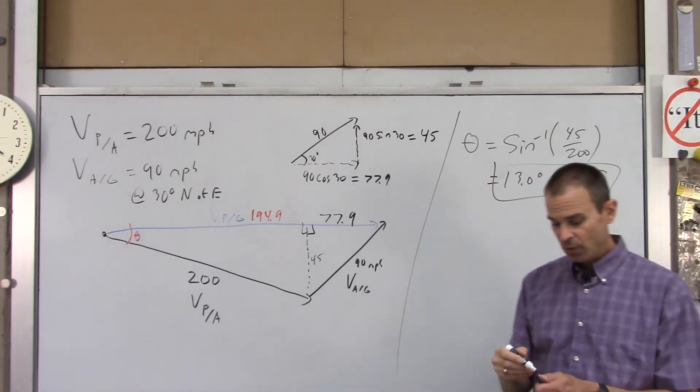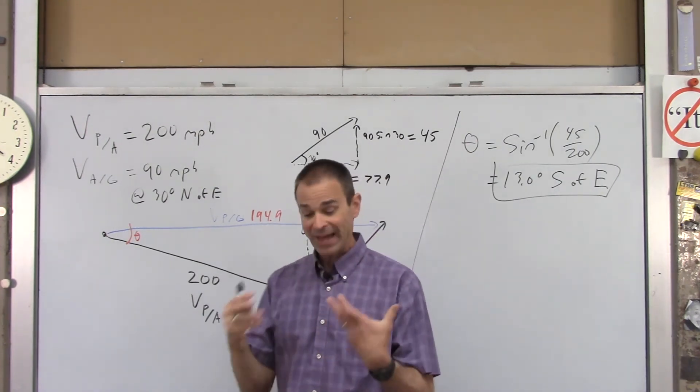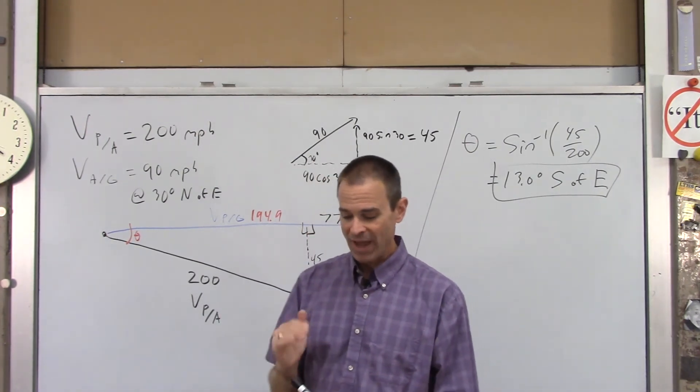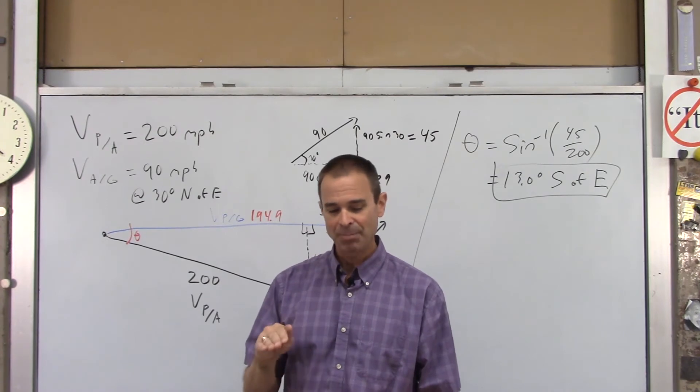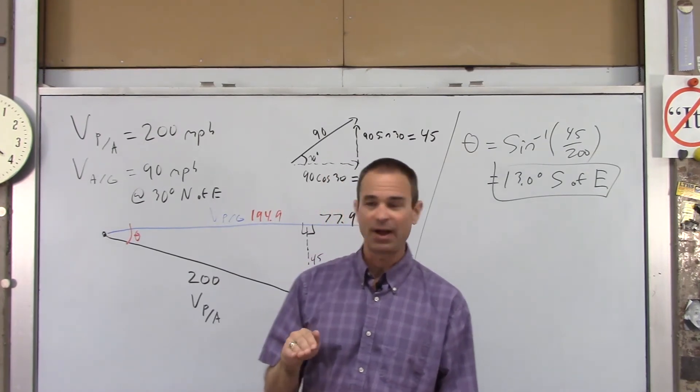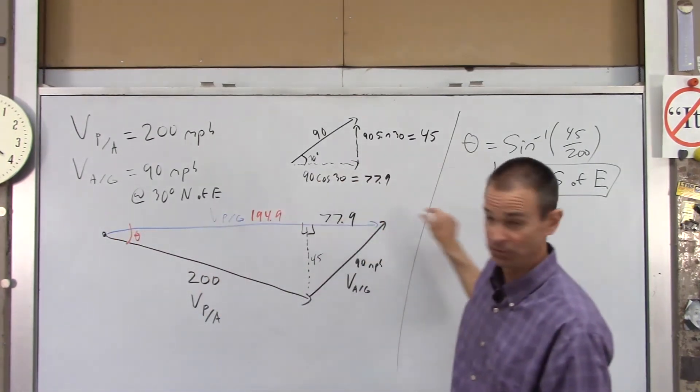And he's got to point his plane south of east. So the pilot, that compass in that plane, would actually say 13 degrees south of east. If that pilot points that plane 13 degrees south of east, it will actually scoot due east.